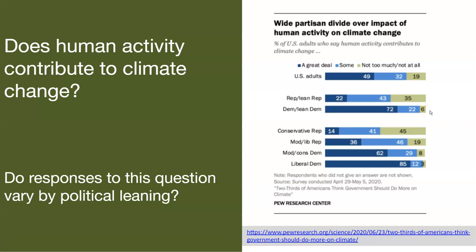So our two-way table is going to be political leaning and the responses to this question. That is, does human activity contribute to climate change a great deal? Some, not too much or not at all. We'll go through this example and use a chi-square test to find the results.